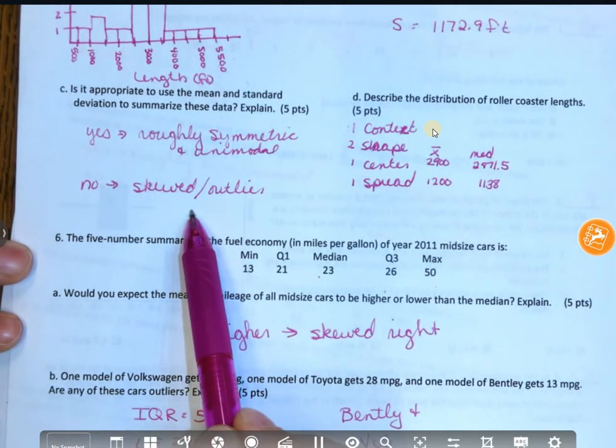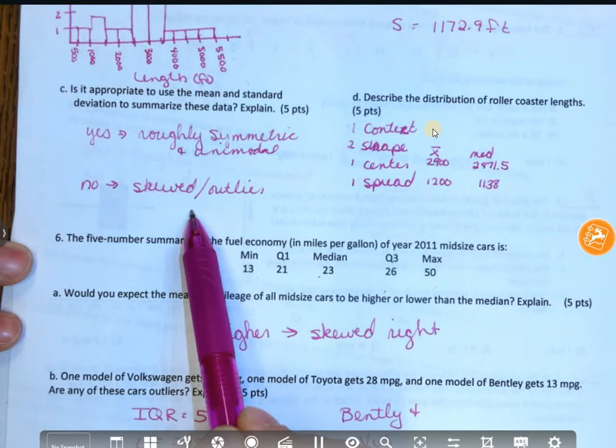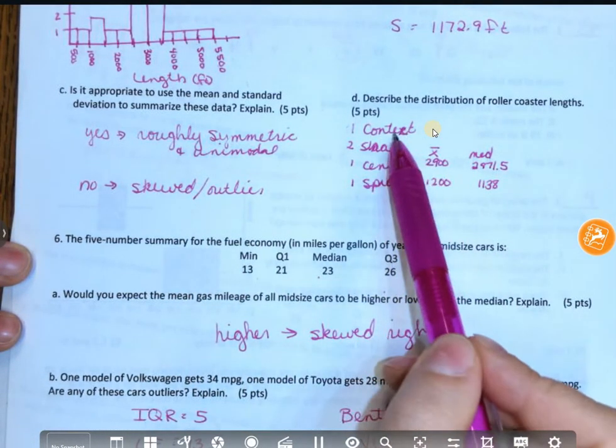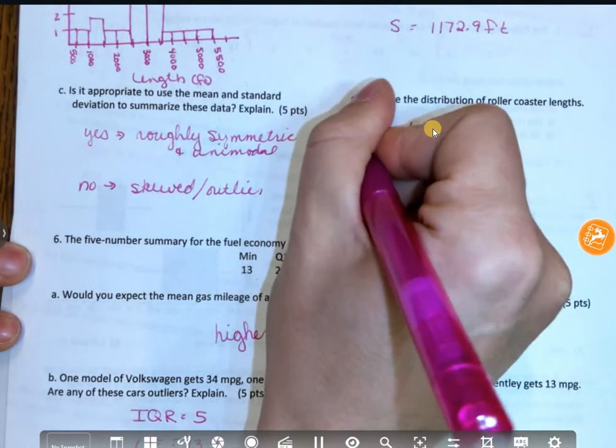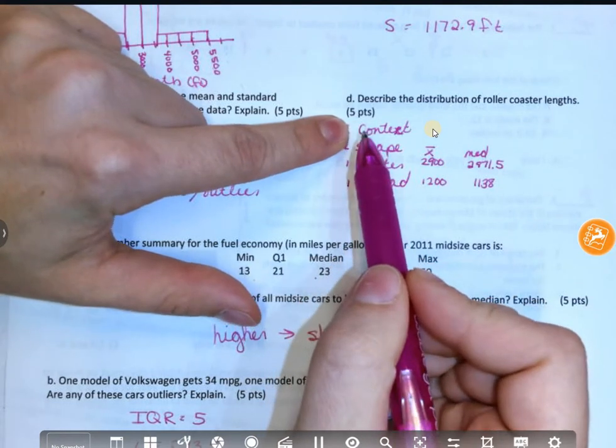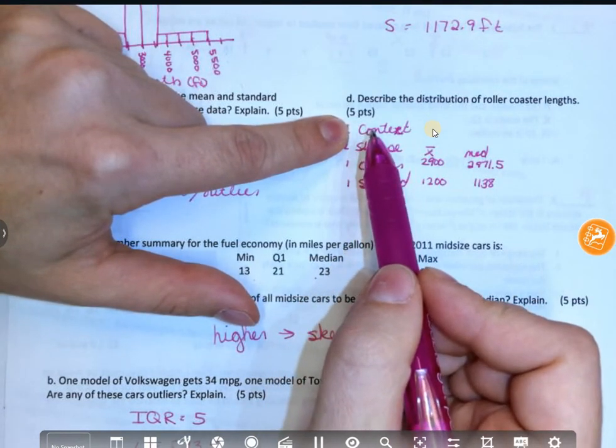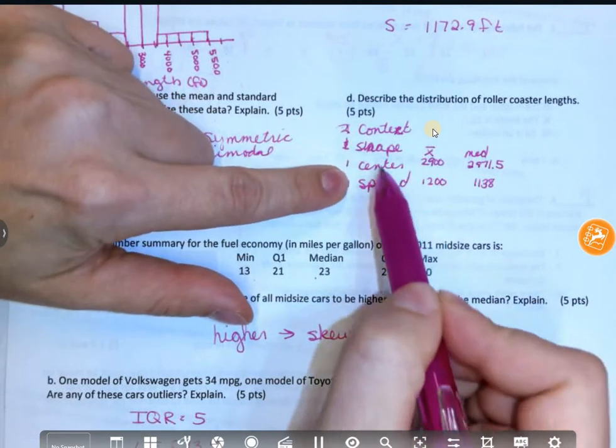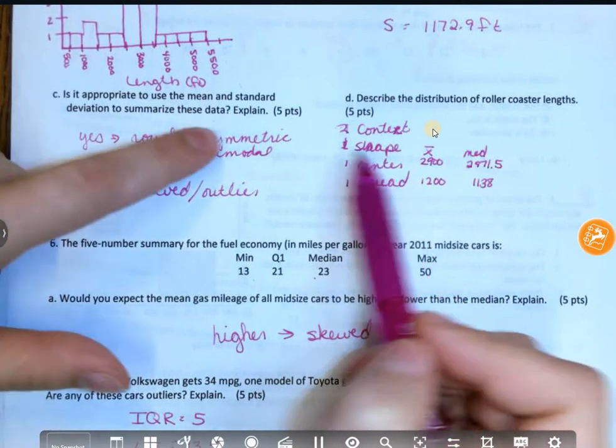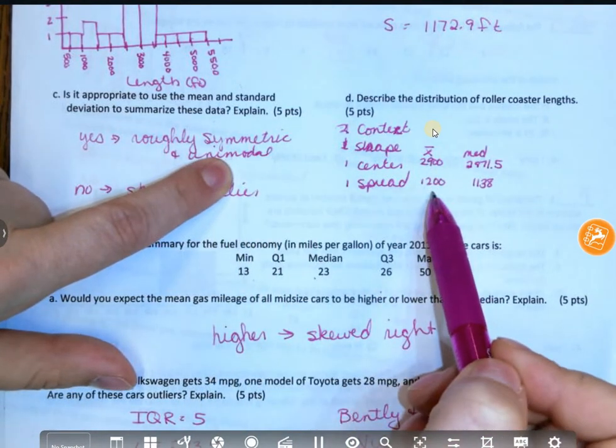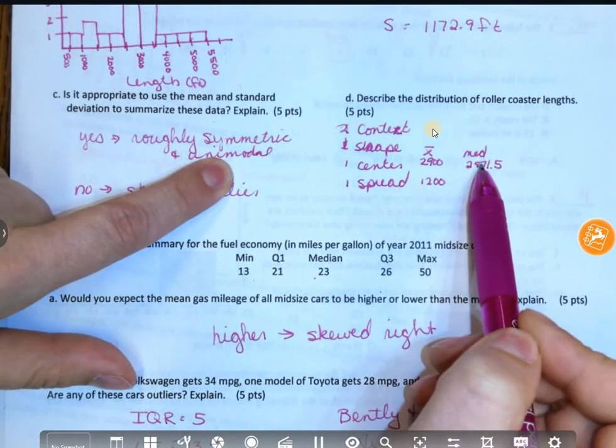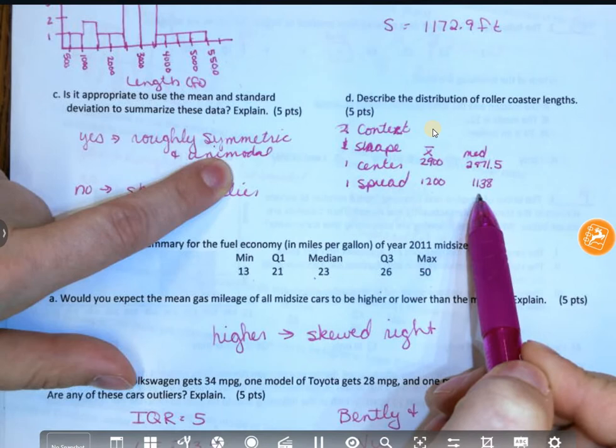And look, I took two answers here. I took either no or yes for both versions. As long as you backed it up. Took anything. And then for this guy, you needed to have context. And I actually did two contexts, one shape. Context, because I said one context for talking about the fact that we're discussing, we're discussing roller coaster lengths. And then each of these numbers had to have a feet on them. And again, if you said roughly symmetric and unimodal, your center had to be the mean and standard deviation for spread. If you said symmetric, median and interquartile range.